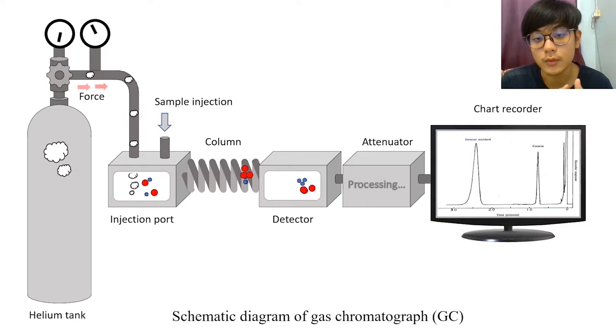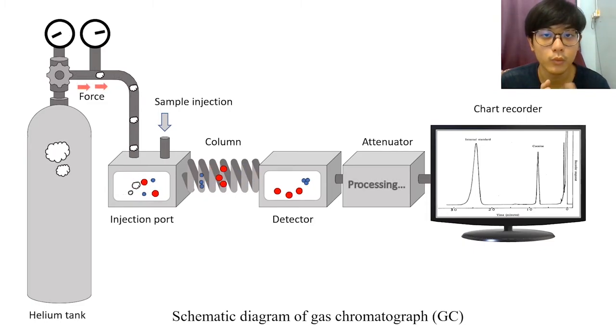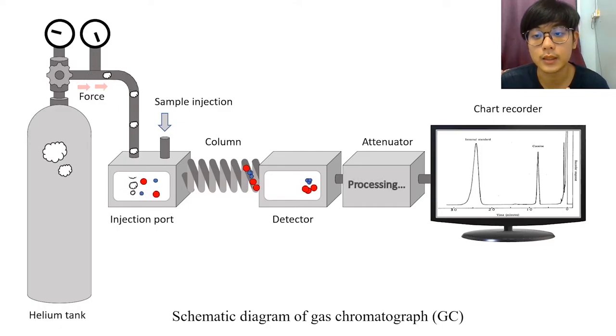After the detection, it will send to an attenuator. The attenuator is actually a controller for the voltage. It lowers the voltage so that the signal from the detector can synchronize to the computation part.